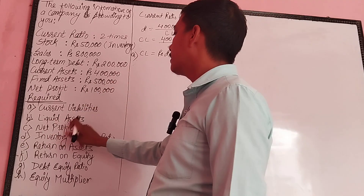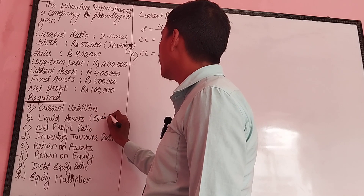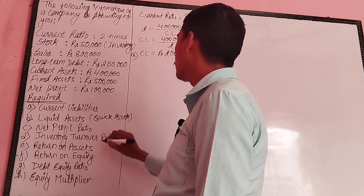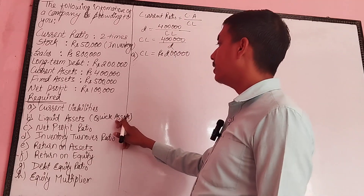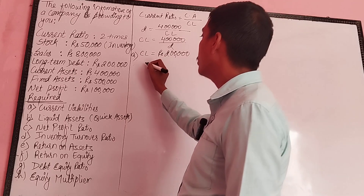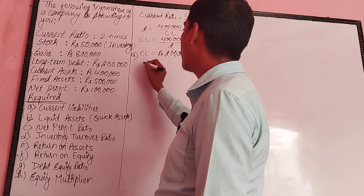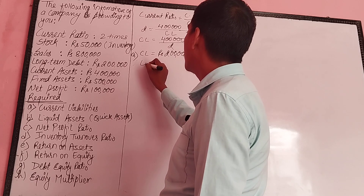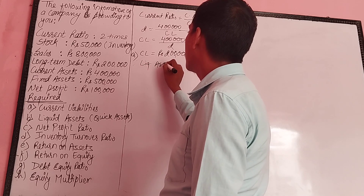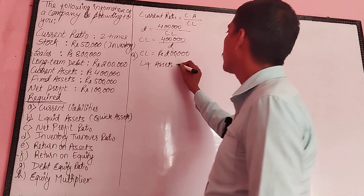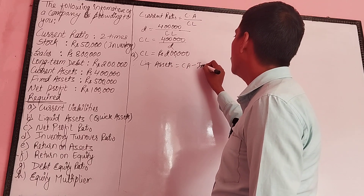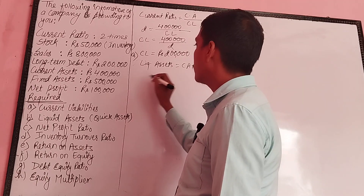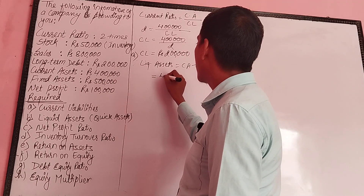Liquid assets are 4 lakh rupees. Current assets are 4 lakh rupees. Liquid assets equal current assets minus inventory. That is 4 lakh rupees minus 2 lakh rupees, which gives us 2 lakh rupees liquid assets.